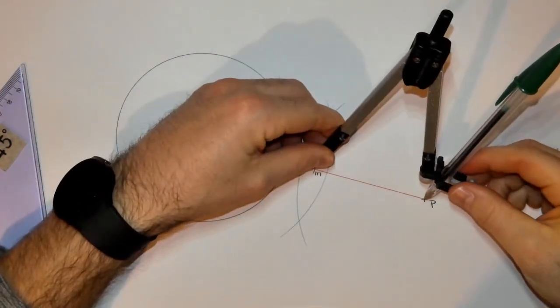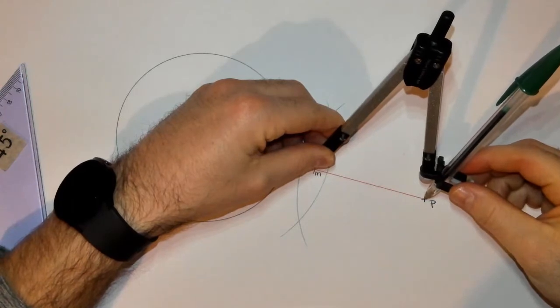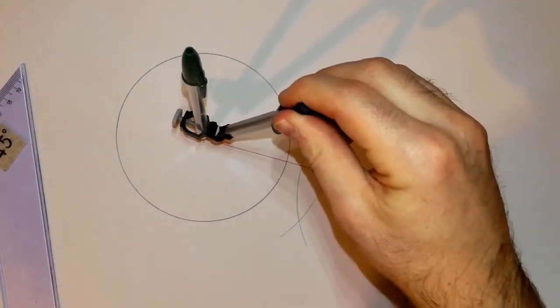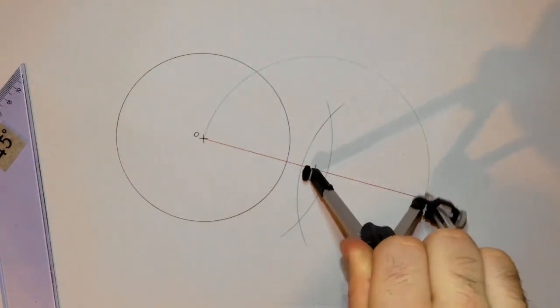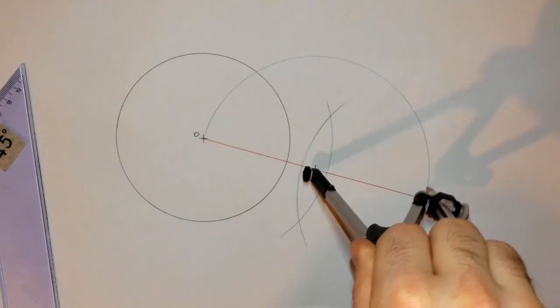M to P being my radius. And what I'm going to do now is I'm going to swing a semicircle. There's my semicircle.